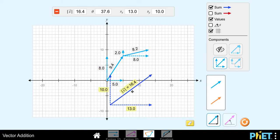So the question then is, how did we get that 16.4? Well, we have to use Pythagoras' Theorem, 13 squared plus 10 squared, if we take the square root of that, we would get 16.4.